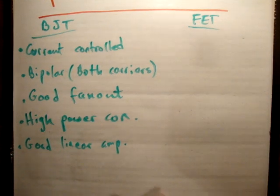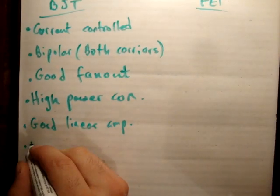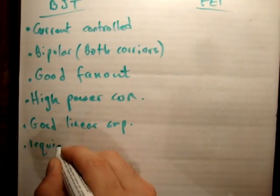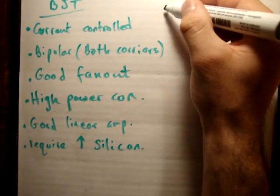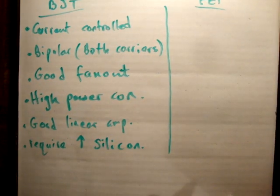And finally it requires a lot of silicon. So it requires a lot of material to build a BJT.